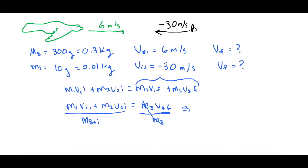So mass of the bird is 0.3 times its initial speed of 6 plus the mass of the insect which is 0.01 kilograms times its speed of negative 30.